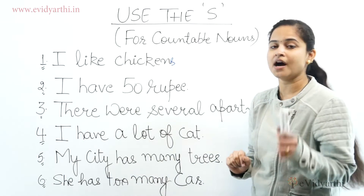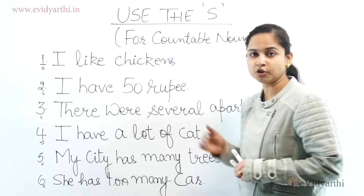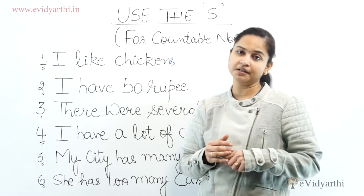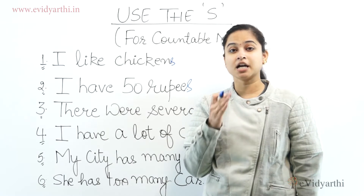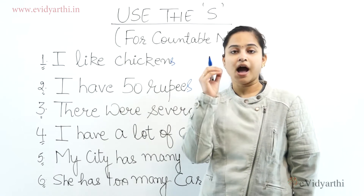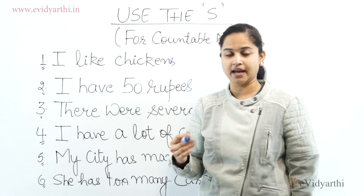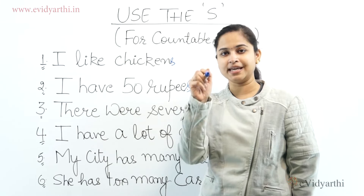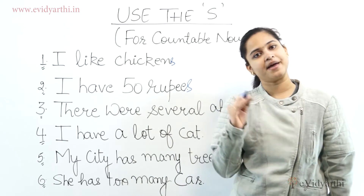जहाँ भी countable nouns होंगे वहाँ पर हम S को as a suffix place करेंगे। जैसे 'I have 50 rupee' — यह sentence गलत है क्योंकि 50 rupee एक countable noun है। सही होगा 'I have 50 rupees'। लेकिन अगर 'I have 1 rupee' तो S नहीं लगेगा, क्योंकि more than one होने पर ही S लगाते हैं।